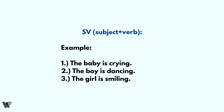The first example is: the baby is crying. Here 'the baby' is the subject and 'is crying' is the verb. The second example: the boy is dancing — 'the boy' is the subject and 'dancing' is the verb. Third example: the girl is smiling — 'the girl' is the subject and 'smiling' is the verb or action word.